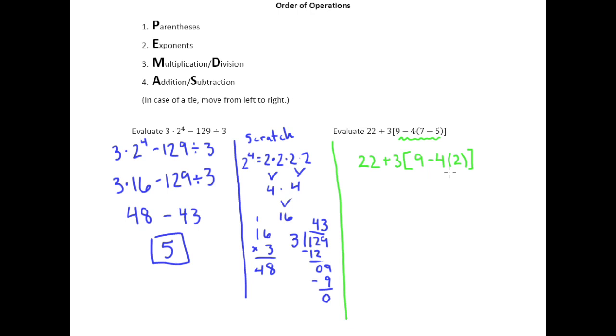And then we can close off that bracket. Okay but we still have some more to do inside these brackets. We have subtraction, we have multiplication, and we know that multiplication comes before subtraction always. So 9 minus, 4 times 2 is 8.